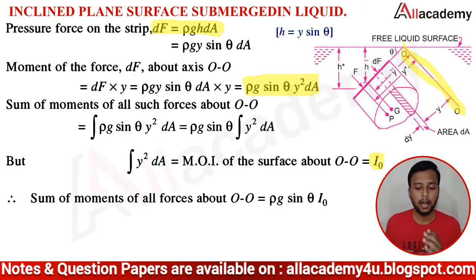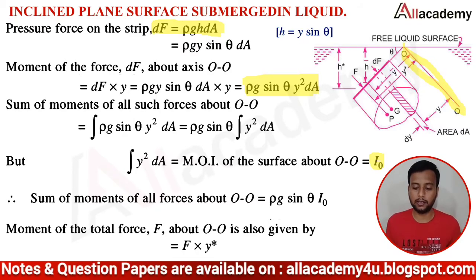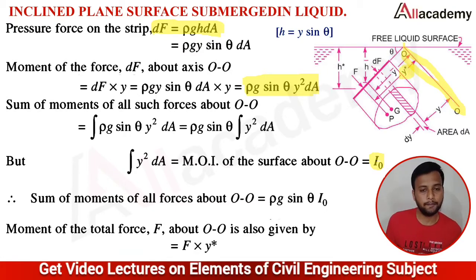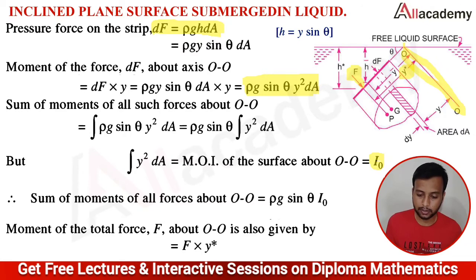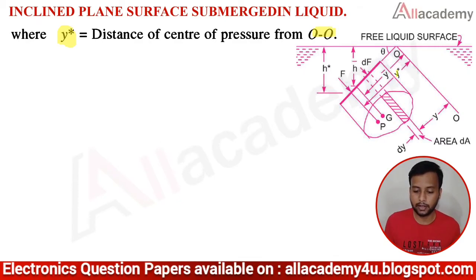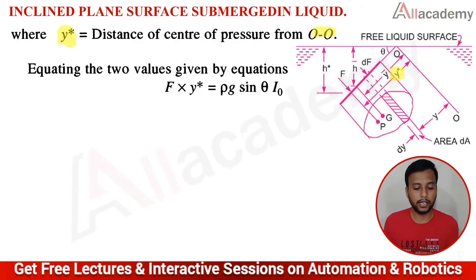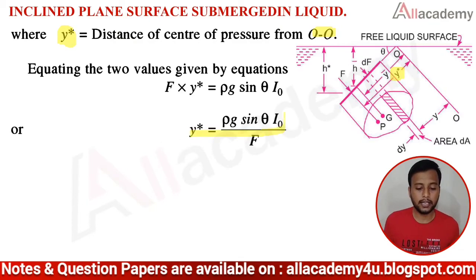The moment of the total force about the O-O axis is F × Y*. Here Y* is the distance from the center of pressure to the O-O axis, and F is the total force acting at the center of pressure. Equating the two: F × Y* = ρg sin θ × I₀, which gives Y* = ρg sin θ × I₀ / F.